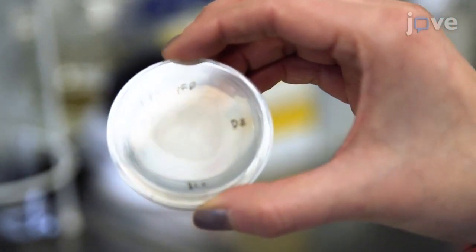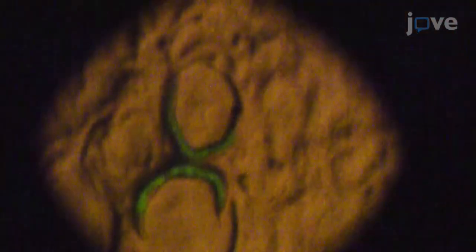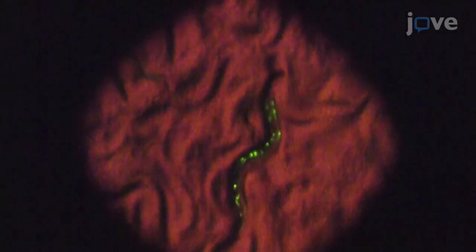To begin, grow and maintain nematodes at 20 degrees Celsius on NGM plates. Age the nematodes until day 4 of life as the young adults, and day 8 of life as the old adults.